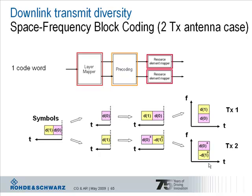First of all, these symbols are split onto two different layers in the layer mapper. And they are then precoded according to the space frequency block coding scheme which is predefined in the standards. The example shown here shows that the symbols are duplicated and then the conjugate complex signals or even the negative ones are transmitted according to a predefined rule. The resource element mapper defines how to transmit these symbols in time and frequency and over the antennas. The same information is transmitted on both antennas because we have transmit diversity, but with different precoding.